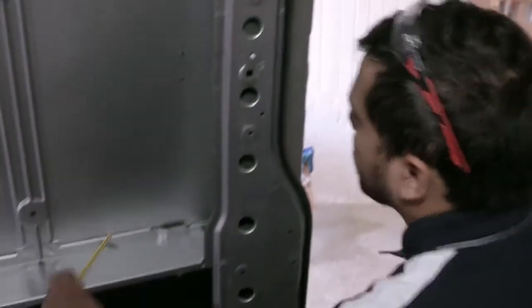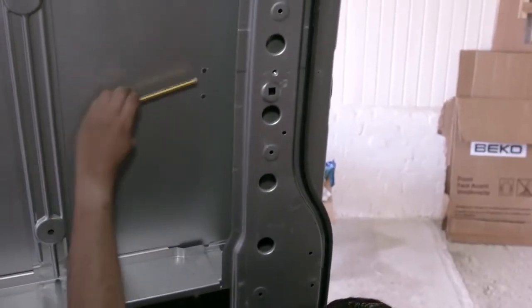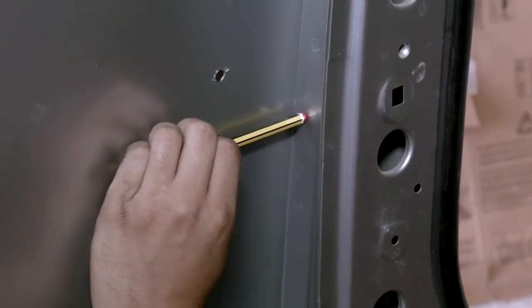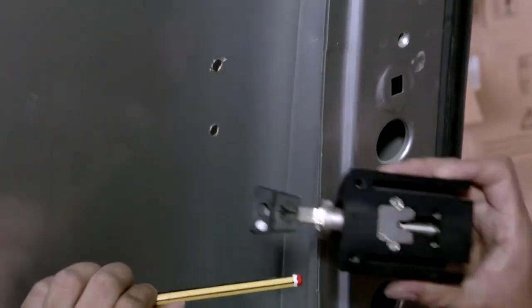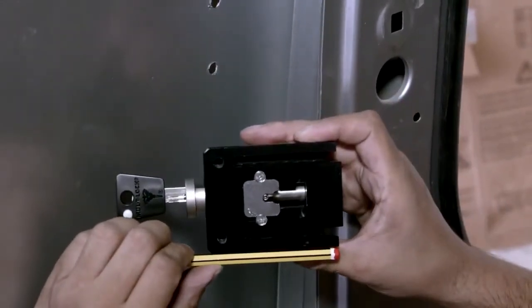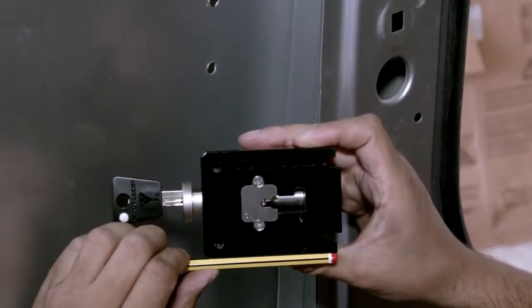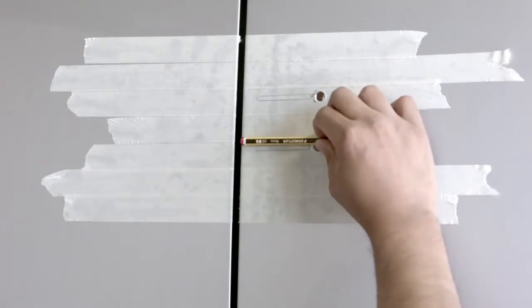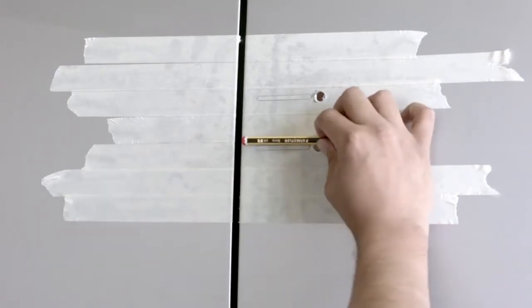Before we can drill the two remaining holes, we need to move inside the van to calculate what positions are available. Using one of the fixed holes as a datum, we will slide a pencil along the panel until an obstruction is found. On this van, we have arrived at the panel return metalwork. We can now transfer this measurement to the outside which will allow us to identify the best positioning for the fixings.